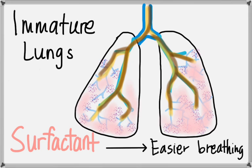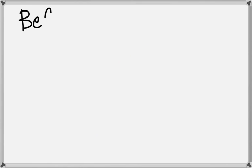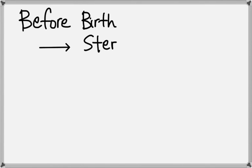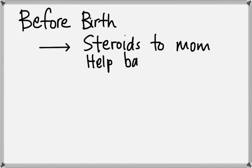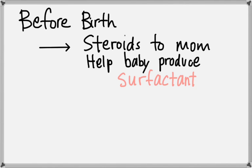If the baby's lungs are immature, before birth medications like steroids can be given to mom in labor to help the lungs start to produce surfactant. Surfactant helps the baby breathe easier. After birth, artificial surfactant is available and can be given to the baby.